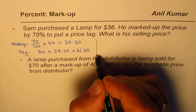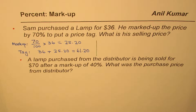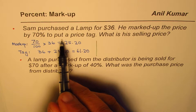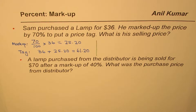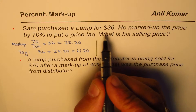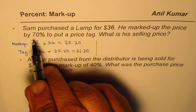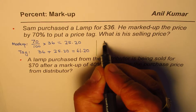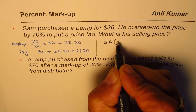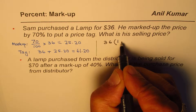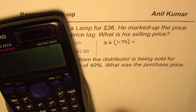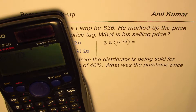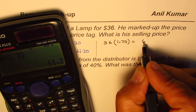Now here is another method, which is a faster way of doing the same thing. When we see that 70% is markup, that means the original price of $36 has been increased. Instead of paying $36, you are paying 1.70 times $36. So the markup price is 36 times (1 + 70%), or 1.70. Let's calculate: 36 times 1.70 equals $61.20.